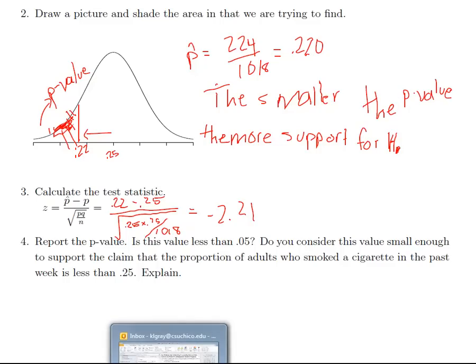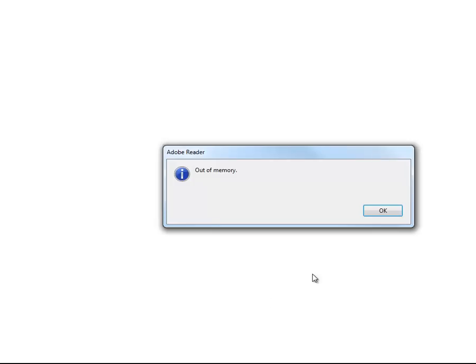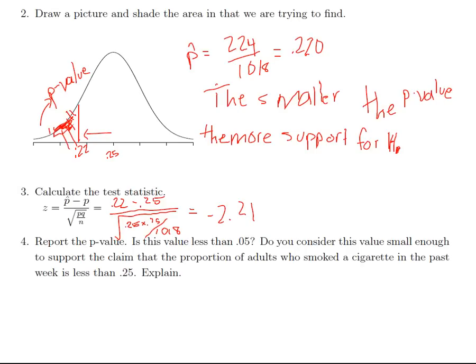Alright, now I can just go to my normal table. My normal table disappeared. I don't know where it went. Okay, well, just imagine you have a normal table and you're going to look up that value of negative 2.21. The area to the left turns out to be 0.0136. And so that's our p-value.